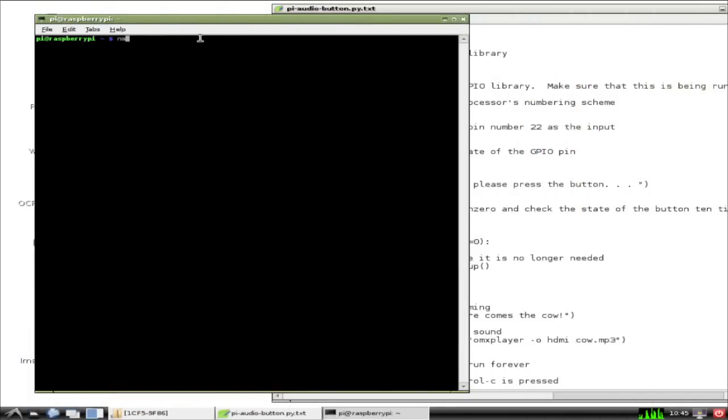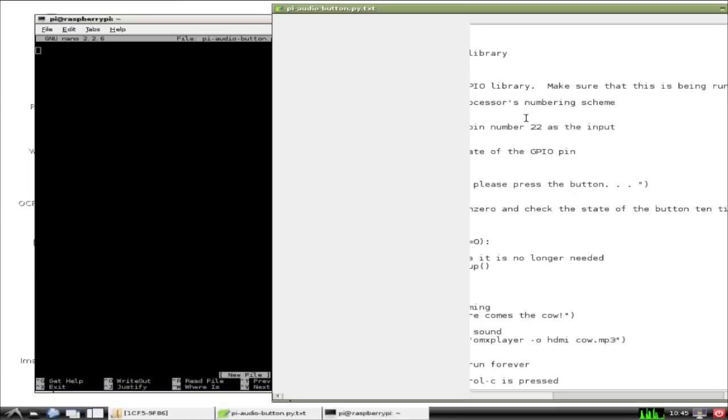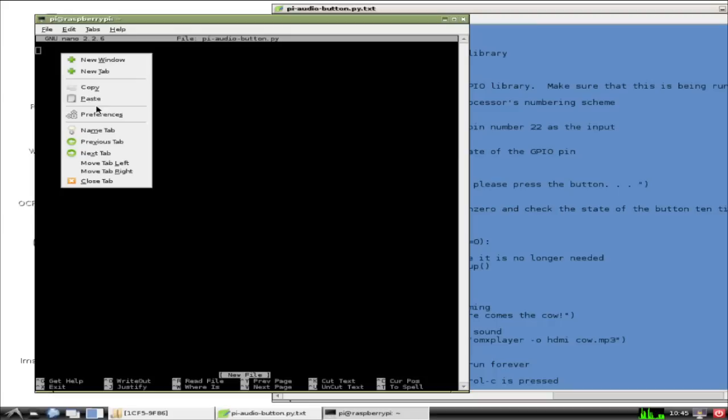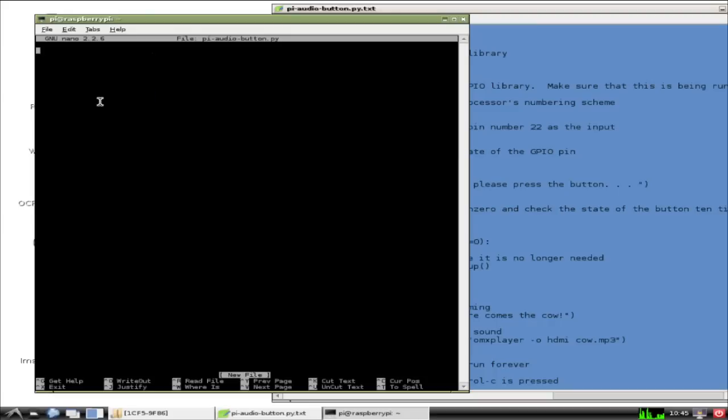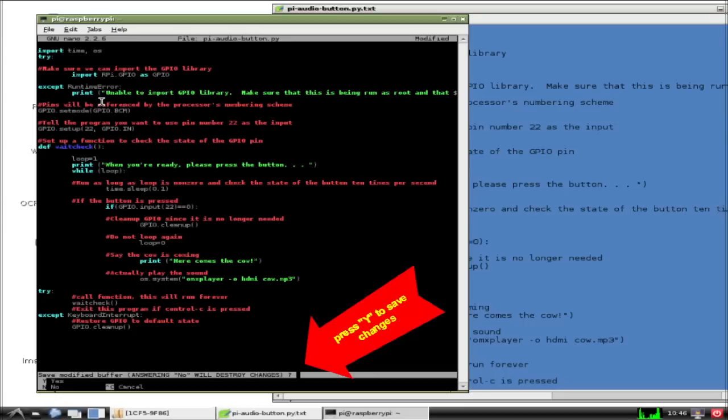One way to create a Python file is to use nano. Type in nano space pi dash audio dash button dot py. And you'll see a screen editor like this. Once you've created the file, press control x, and then you'll be prompted to save your work, so press y, and then press enter to save it as the same name.